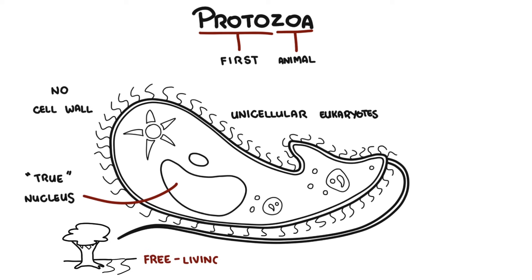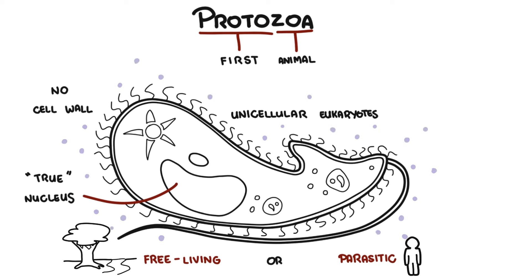Protozoans can either be free-living or parasitic in nature, meaning they can live in the outside world without any issues, mostly in the water, or they can be parasitic in nature and live in and infect humans. Protozoa range in size from slightly more than 1 to more than 100 micrometers. They are single-celled organisms with a true membrane-bound nucleus, but they do not have a cell wall.